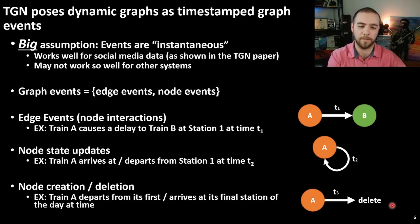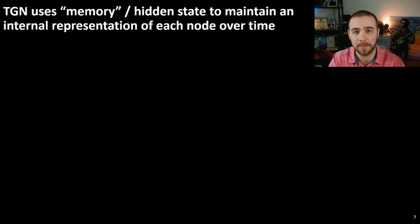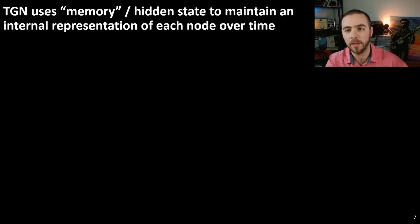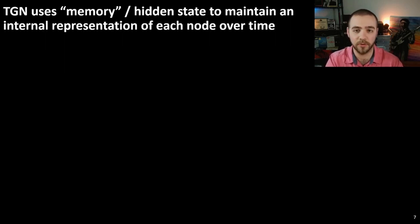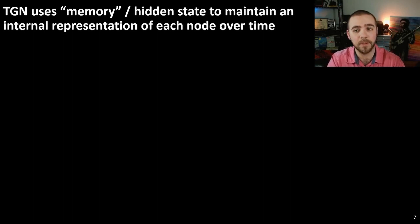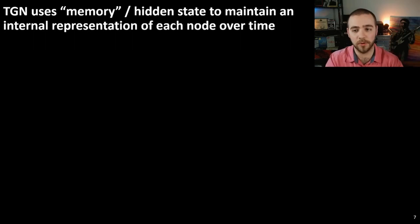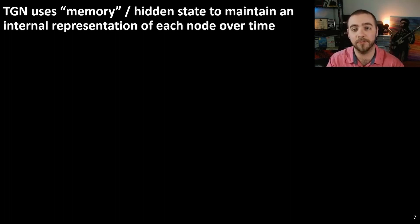The TGN model encompasses many previously proposed dynamic graph models, and it's important to understand it to gain insight into how future models could be developed. The TGN model uses a notion of memory or hidden state to maintain an internal representation of each node over time. You can think of this as an LSTM associated with each node on the network, where each node's LSTM module updates based on graph events to maintain a fresh representation within each node's memory.